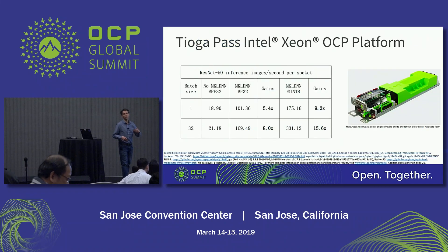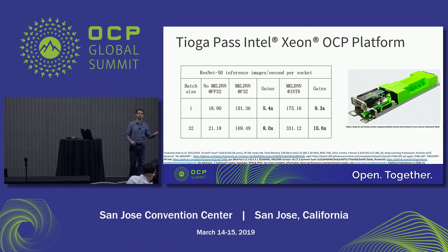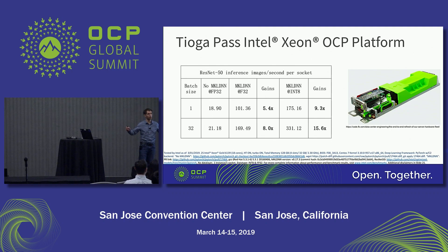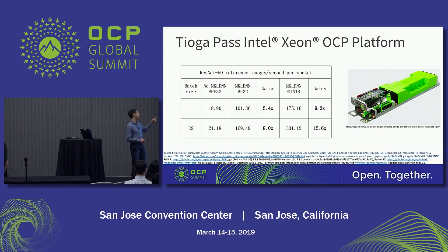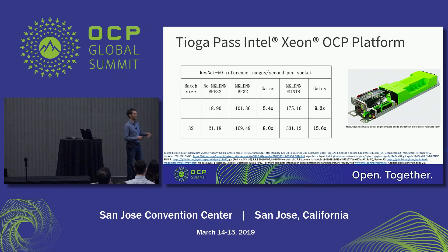Let me motivate this software optimization by showing you some results. These are benefits we are observing on the Tioga Pass, an OCP platform with a dual-socket Xeon — showing results on one socket using a classification model known as ResNet-50, with and without the Intel MKL DNN library. Gains range from 5.4x at batch size 1 up to 15.6x at lower precision (8 bits rather than 32 bits) with a larger batch size of 32 across our 18-core socket.